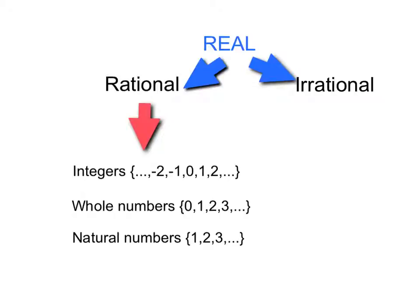Notice that the irrational numbers are a category all by themselves, but the rational numbers also have subcategories, which include the integers, the whole numbers, and the natural numbers. Starting with the natural numbers, you can see that starts with the number one and continues on increasing by one in the positive direction — one, two, three — and the dots mean it just keeps going and going forever.